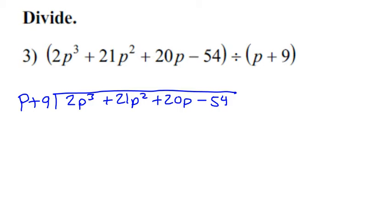So the first thing you do is you say P times what is going to give you 2P to the third power. What's that going to be? 2P squared. And I like to line up my like terms, so I'll put my 2P squared right there. Then you take your 2P squared and you do a distributive property with it. So 2P squared times P will give me the 2P to the third power that I wanted. Now I'll do 2P squared times 9, and that'll give me 18P squared.